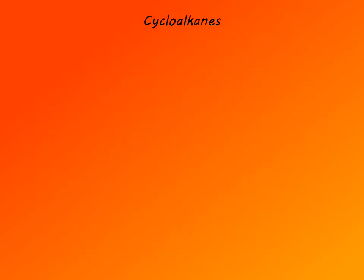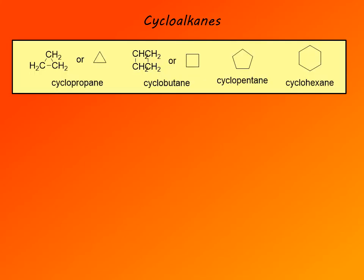Now we can examine nomenclature of cycloalkanes — it's actually a trivial extension of alkane nomenclature. We simply use the prefix cyclo- to indicate that the parent chain is a ring, that it's a cyclic compound. Here are the four simplest cycloalkanes: cyclopropane (three carbons), cyclobutane, cyclopentane, and cyclohexane. Note how simple line formulas of cycloalkanes are — in fact, line formulas were originally introduced into organic chemistry to represent cycloalkanes.